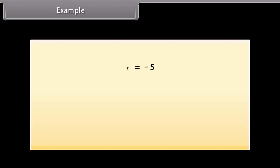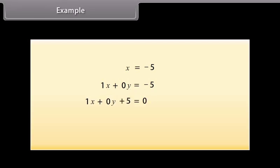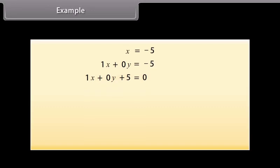Now look at this equation. We will write this equation in two variables. This can be written as 1X plus 0Y is equal to minus 5, or 1X plus 0Y plus 5 is equal to 0. Similarly, the equation Y is equal to 2 can be written as 0X plus 1Y is equal to 2, or 0X plus 1Y minus 2 is equal to 0.